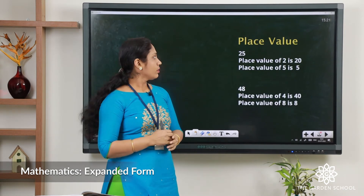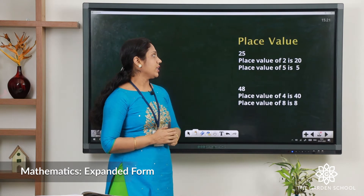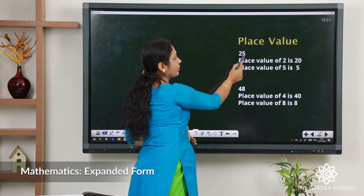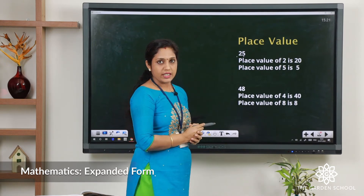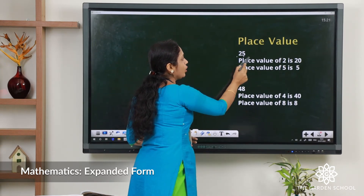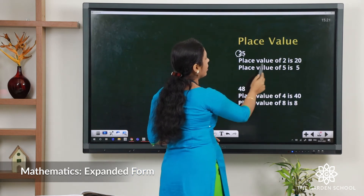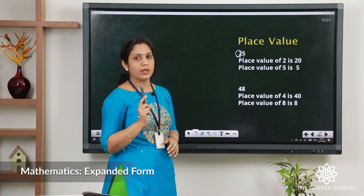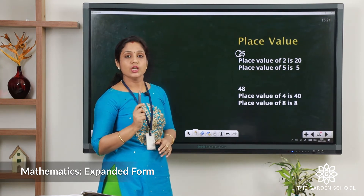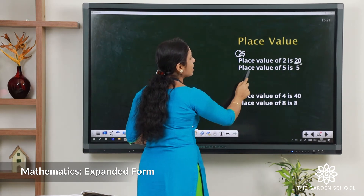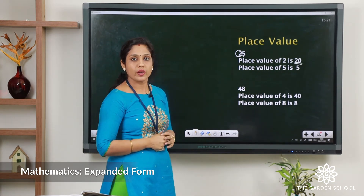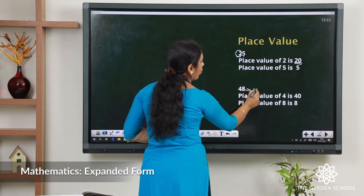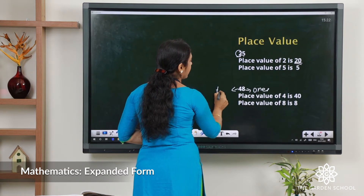The number 25 is again a two-digit number. Five comes under ones place, two comes under tens place. The place value of 2 is 20 because it is in the tens position. The place value of 5 is 5 because it comes in the ones position. Next: 48. Eight comes in the ones position and four comes in the tens position. Place value of 4 is 40 because there are four tens in that — four tens makes 40 — and eight ones makes 8.